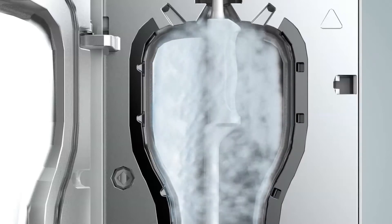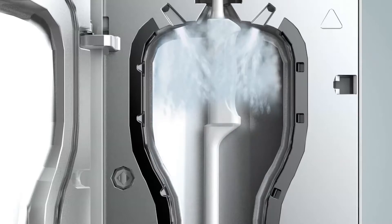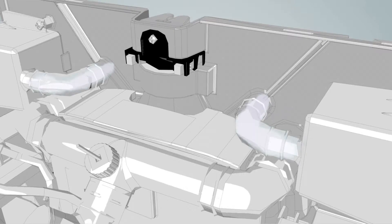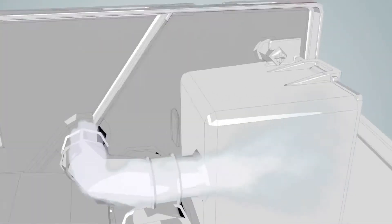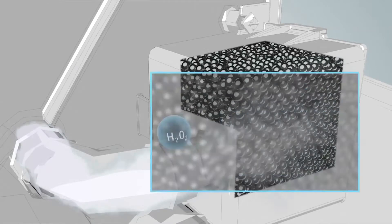After disinfection, residual hydrogen peroxide is blown out of the chamber and passes through destructors, where it is broken down into environmentally friendly water and oxygen.